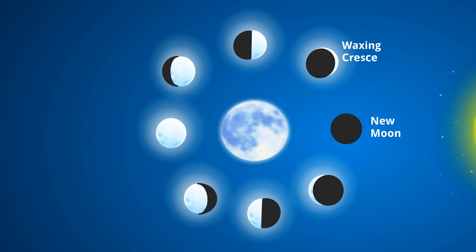A waxing crescent moon is when the moon looks like a crescent, and the crescent increases in size every day.